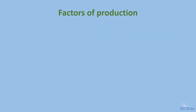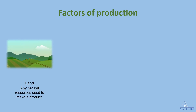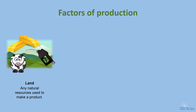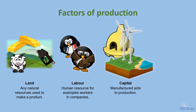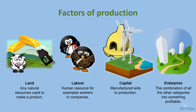When it comes to actually producing anything, the resources used can always be broken down into one of four main categories known as the factors of production. Land is any natural resources used to make a product — beef to make burgers, oil used for fuel, or the gold in a necklace would all be classed as land. Labor is any human resource, so the teachers in a school or the pilot on a plane. Capital is any manufactured aid to production — ovens in a bakery or the power station used to produce electricity. Enterprise is the creativity needed to combine all the other categories into something profitable — this would usually be the entrepreneur running the business.